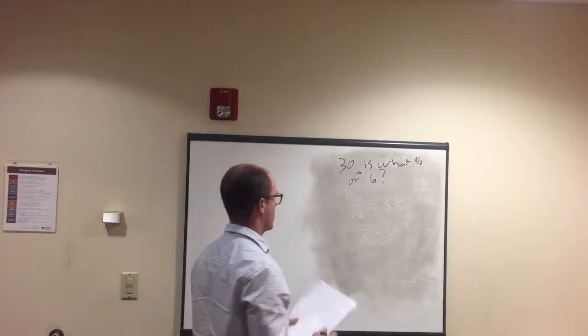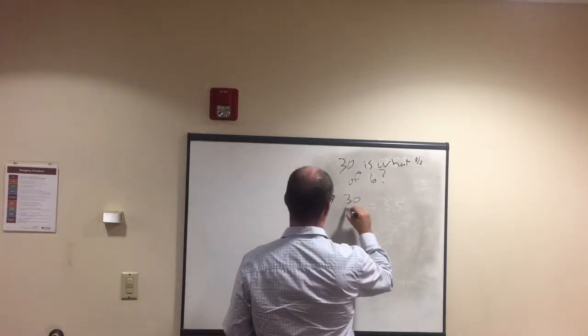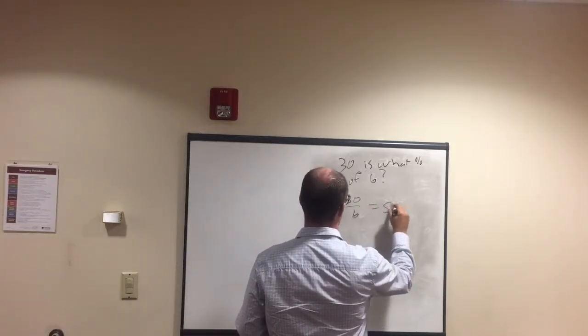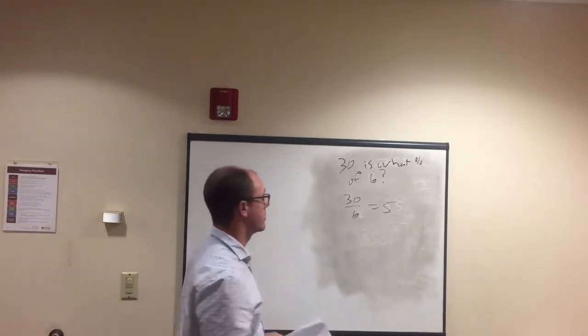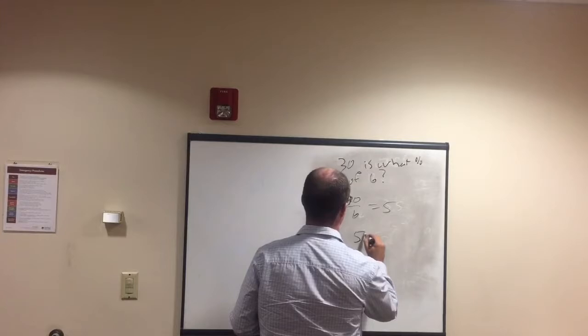So again, we're doing exactly the same thing. 30 over 6 equals 5. Does that mean 5 percent? No,